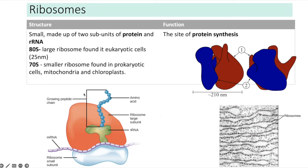Ribosomes are made up of two subunits — a large and a small subunit — composed of protein and rRNA. There are two types: 80S, the larger ribosomes found in eukaryotic organisms, and 70S, the smaller ones found in prokaryotic cells and also in the mitochondria and chloroplasts of eukaryotic organisms. The function of ribosomes is protein synthesis.